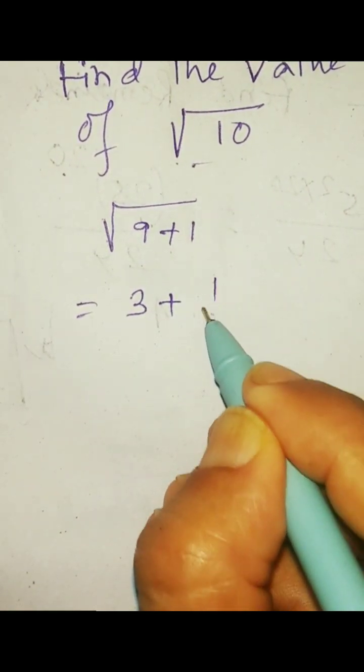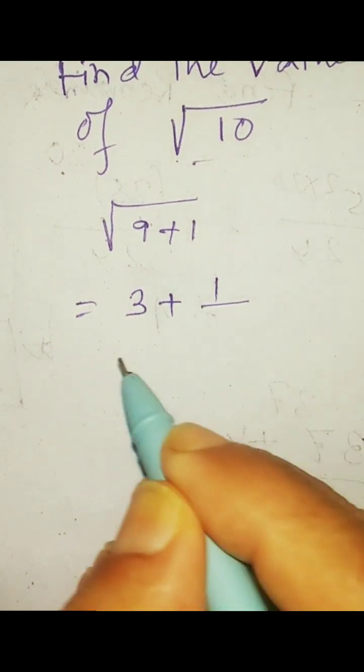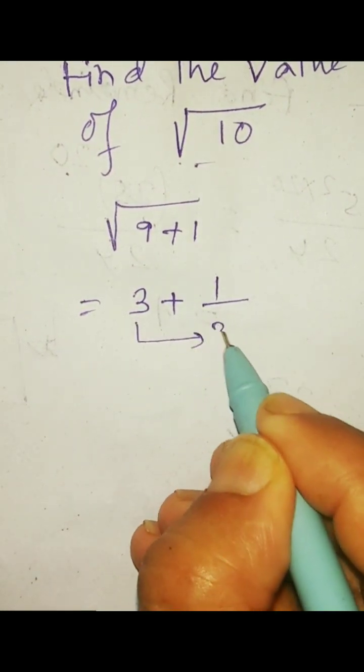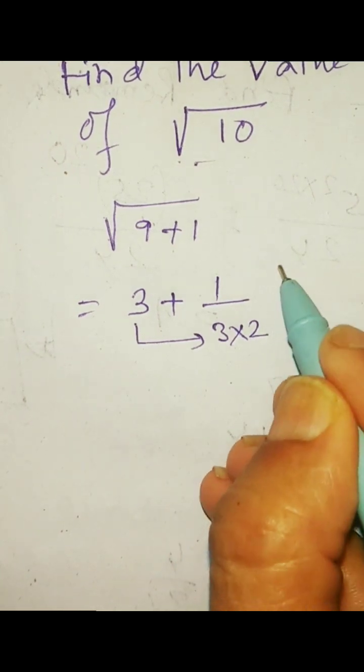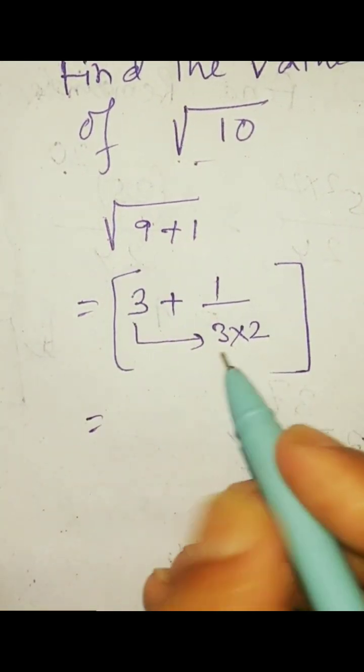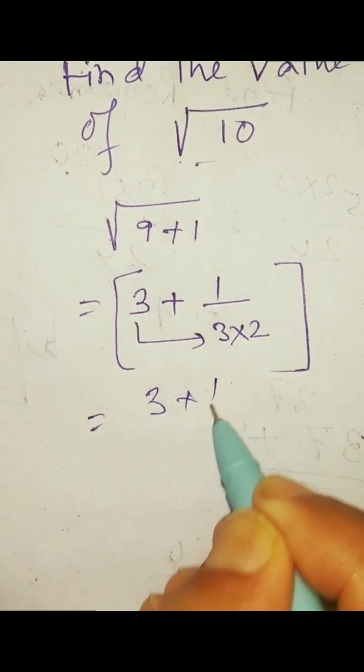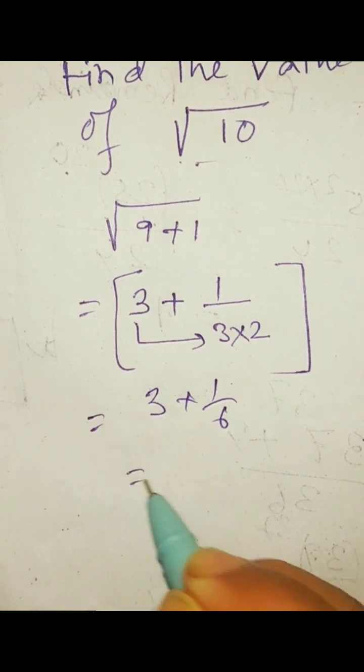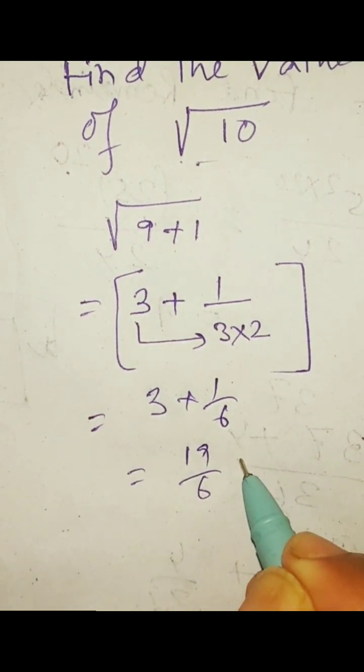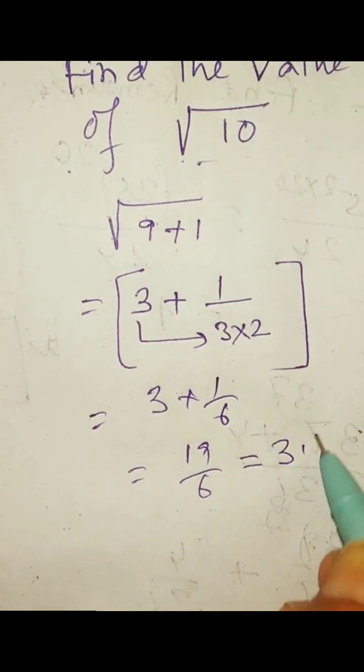3 plus, and put 1 in the numerator and in the denominator just make it double here, 3 into 2. This is the formula basically. So this is 3 plus 1 by 6 which is equal to 19 by 6 which is equal to 3.16.